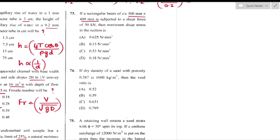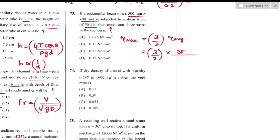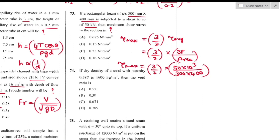Question number 73: Rectangular beam 300 mm × 400 mm subjected to shear force 50 kN. Maximum shear stress = 3/2 × (V/A) = 3/2 × (50,000 / (300 × 400)) = 0.625 N/mm² — option A is the right answer.